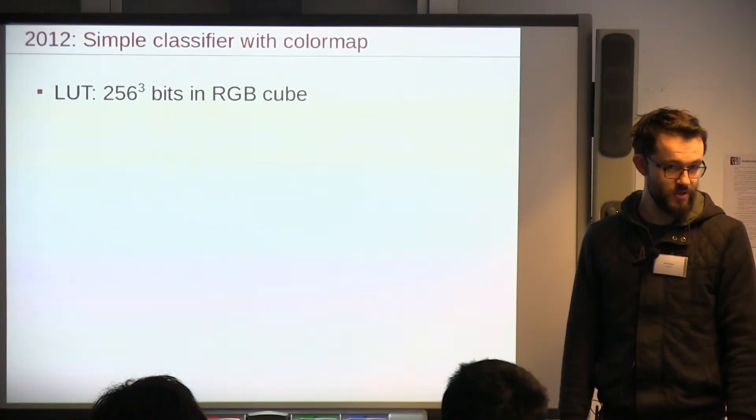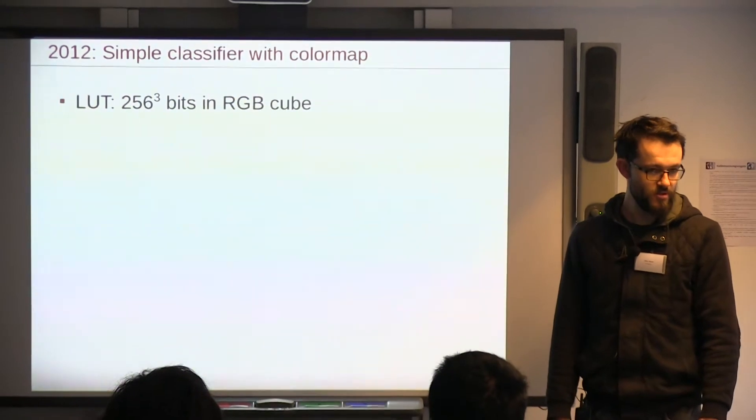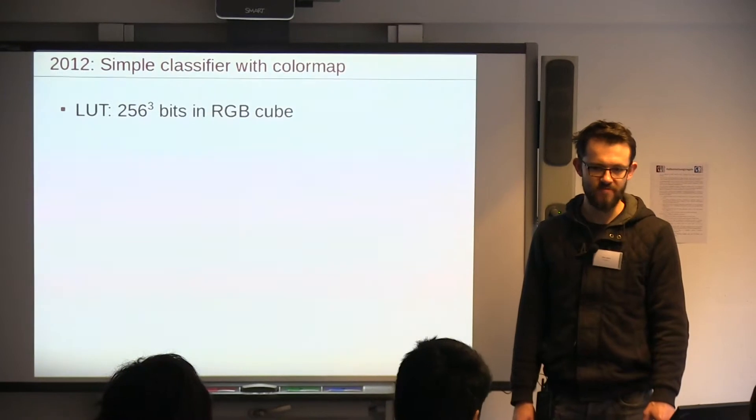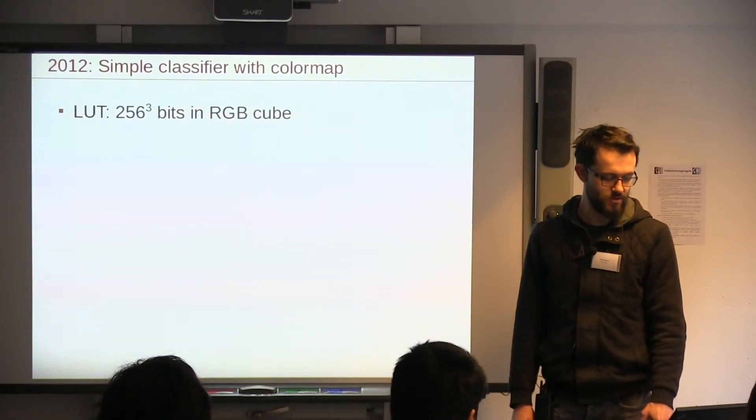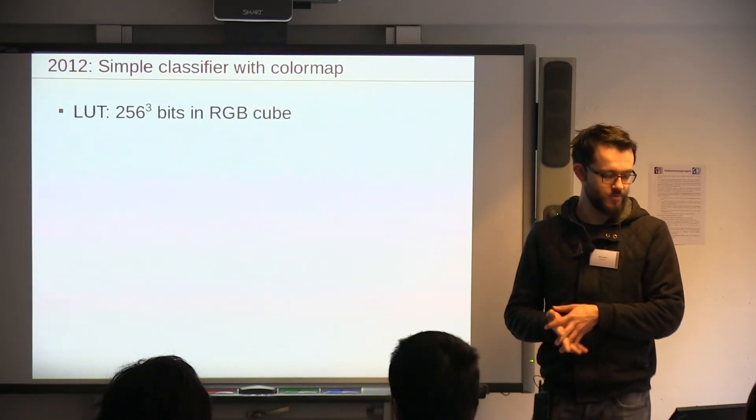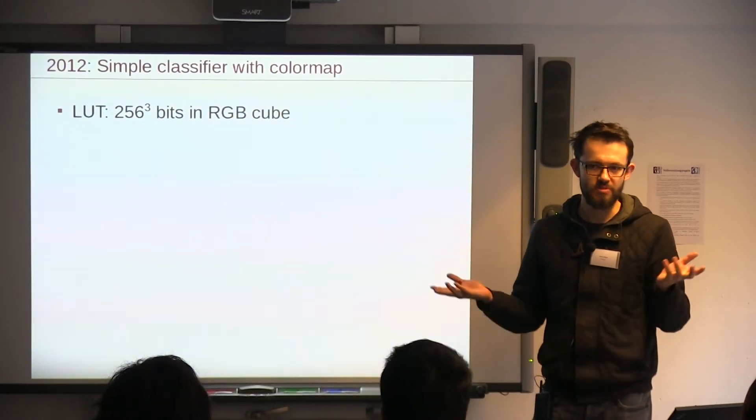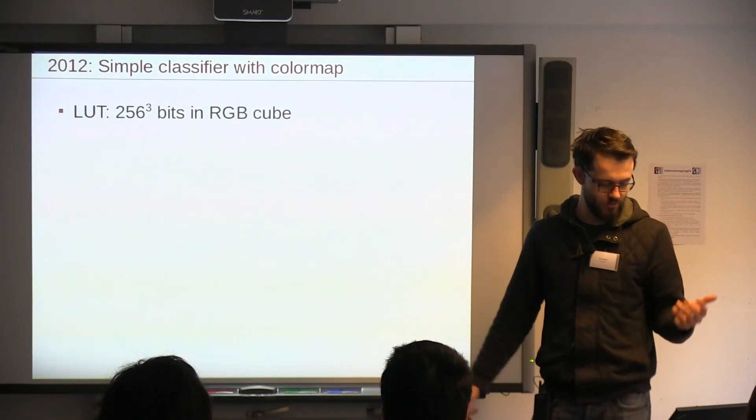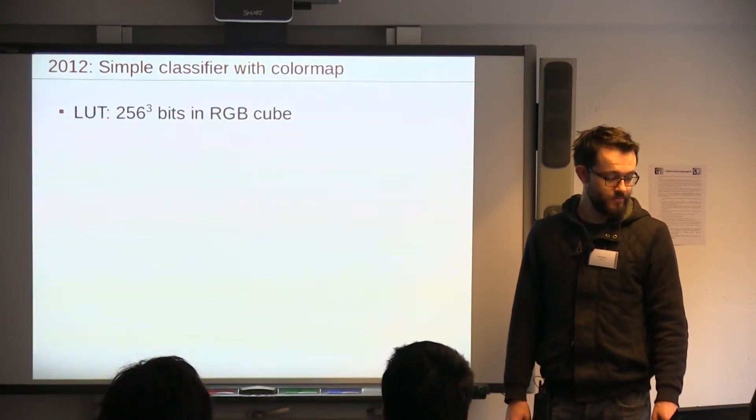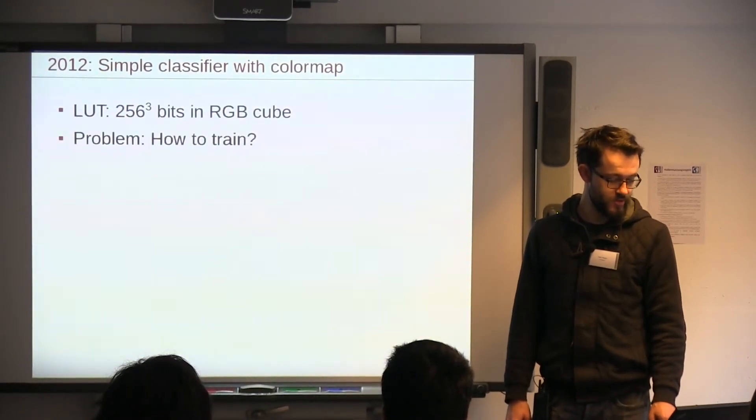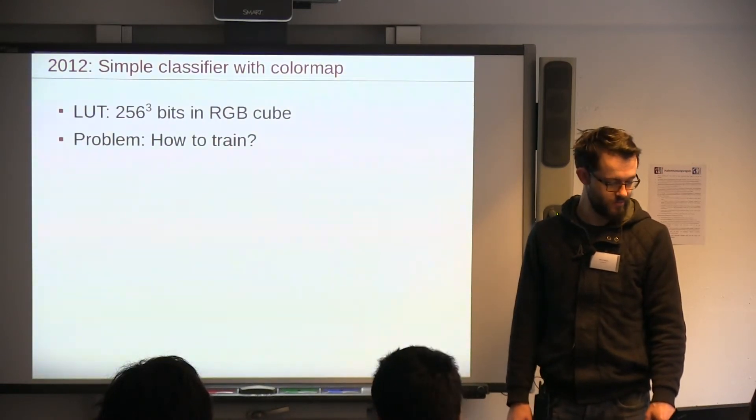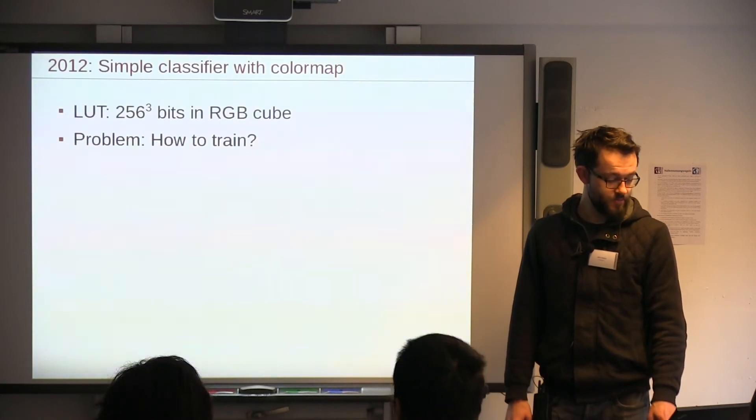The first solution we had in 2012 was very rudimentary. Actually, we couldn't play the game that well at all. So in fact, we only needed to detect whether the signal is red or not. We didn't even care about blinking or anything. For that, we used a simple lookup table, where you basically list all the colors you consider as part of a certain color, in this case red. The problem with this approach was, how do you train it? You can't just list those colors by hand. It's many, many colors.